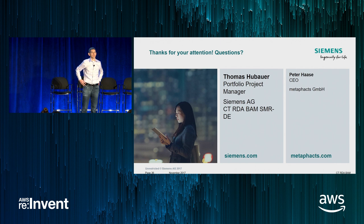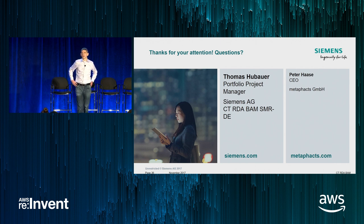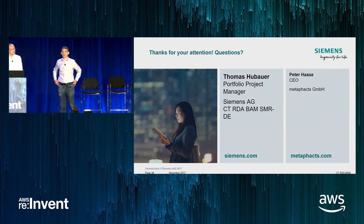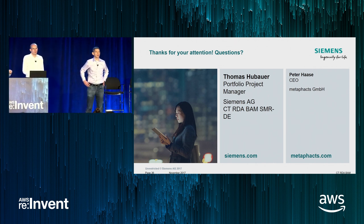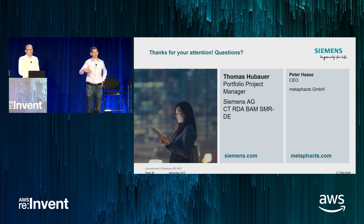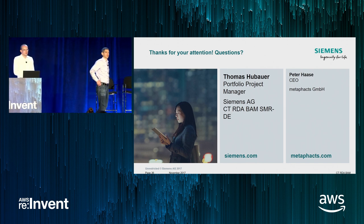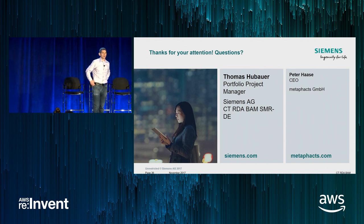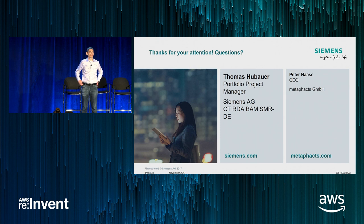Question: does Neptune have extension points to invoke a Lambda function when data changes? Right now, it doesn't. There's clearly a lot of interest in doing something like DynamoDB Streams, where as you change the graph, we publish a delta that could be processed by Lambda. That's an area of big interest — I don't have anything concrete to share, but I do think it could be very useful to customers.